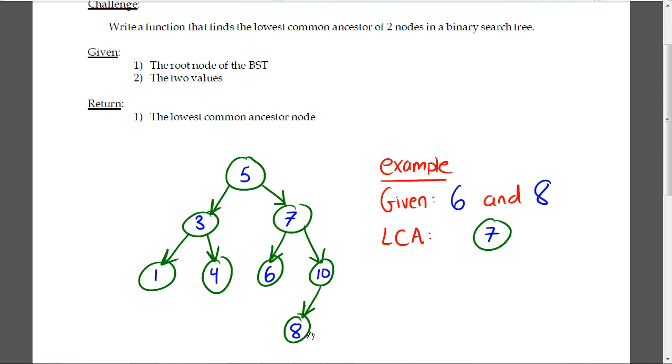Here you see the 6, here you see the 8. What your function is supposed to return is the lowest common ancestor of these two values.